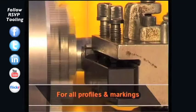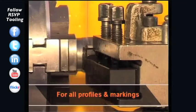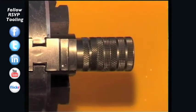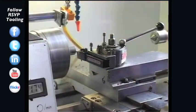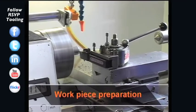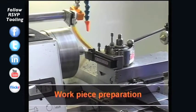The required knurling wheel is always the counter form of the profile desired on the workpiece. As a general rule, the workpiece itself should be prepared to achieve concentricity before knurling starts. The workpiece is therefore pre-turned, as we can see in the picture.